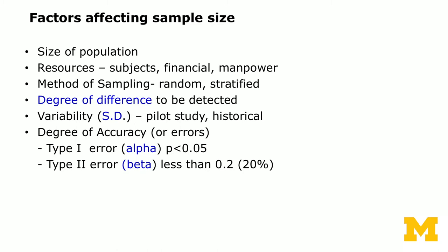Type two error, denoted beta, is typically set to less than 20 percent. The power of the test is one minus beta. So if you have a type two error of 20 percent, and the treatment effect actually exists — the wolf is actually there — there's an 80 percent probability that you will detect it. That's the power of the test.